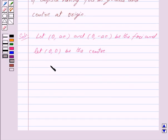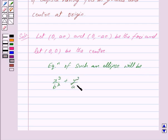Then equation of such an ellipse will be x² / b² + y² / a² = 1.